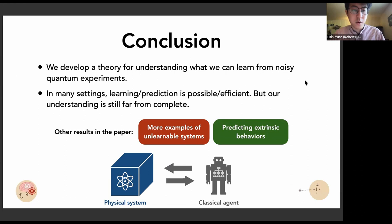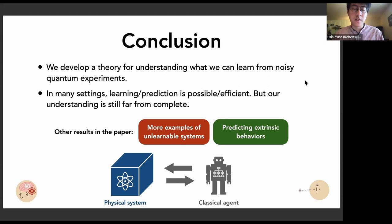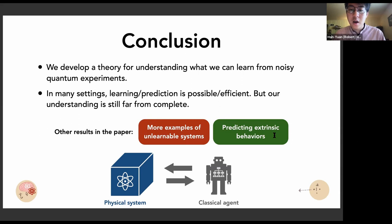To conclude, in this work we developed a theory for understanding what can be learned from noisy quantum experiments. In various settings, learning is possible and can be done efficiently. However, I believe we are still at the beginning of having a nice theory on these aspects — our understanding is still far from complete, and there's still a lot to do. The paper also shows additional results including more examples of unlearnable systems and results about predicting extrinsic behavior — learning an effective model that can predict outcomes under different experiments.